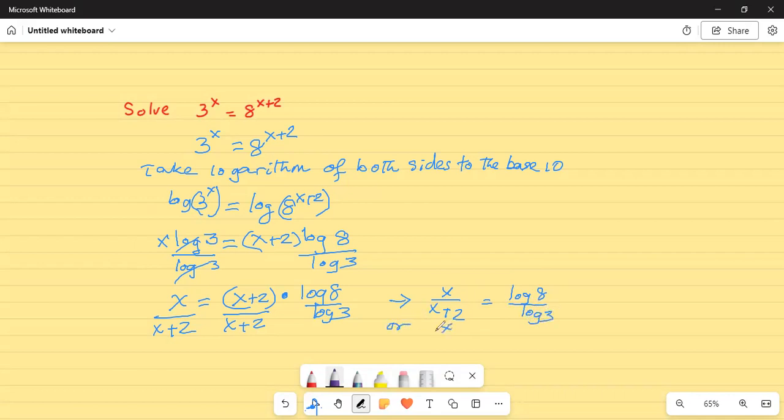Or, x divided by x plus 2 is equal to log 8 divided by log 3. So, logarithm of 8 divided by logarithm of 3 is equal to 1.893.